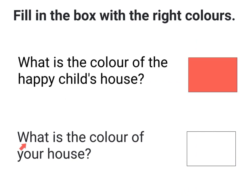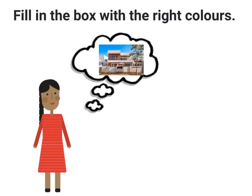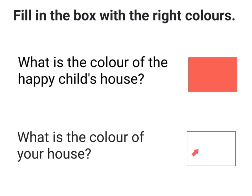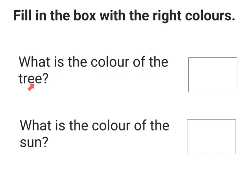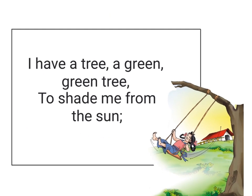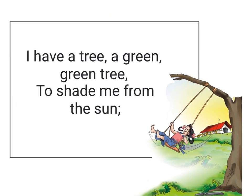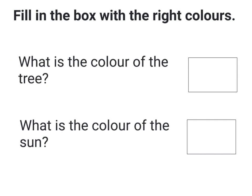The second question is: what is the color of your house? I will have to think about the color of my house. The color of my house is brown, so I will color the box brown. The next question is: what is the color of the tree? Going back to the poem, it says 'I have a tree, a green, green tree to shade me from the sun.' This tells me that the tree is green, so I will color the box green.